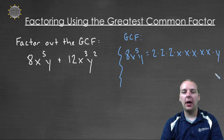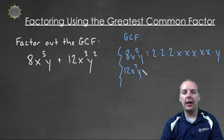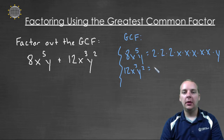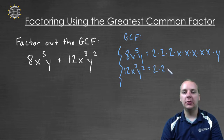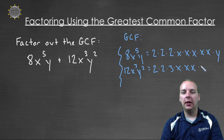And then times y of course. Then for twelve x to the third y to the second: that would be two times six is twelve, and six is two times three. Then we'd have x times x times x for x cubed, and y times y for y squared.